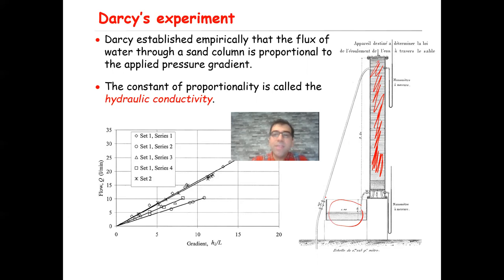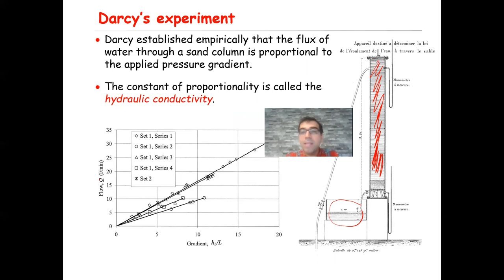He found that if he plots the volumetric flow rate, capital Q, versus the applied pressure gradient, he gets a straight line. Different symbols refer to different filtering media — different types of sand — but in each case he established empirically that the flux of water through a sand column is linearly proportional to the applied pressure gradient. The constant of proportionality is called hydraulic conductivity.